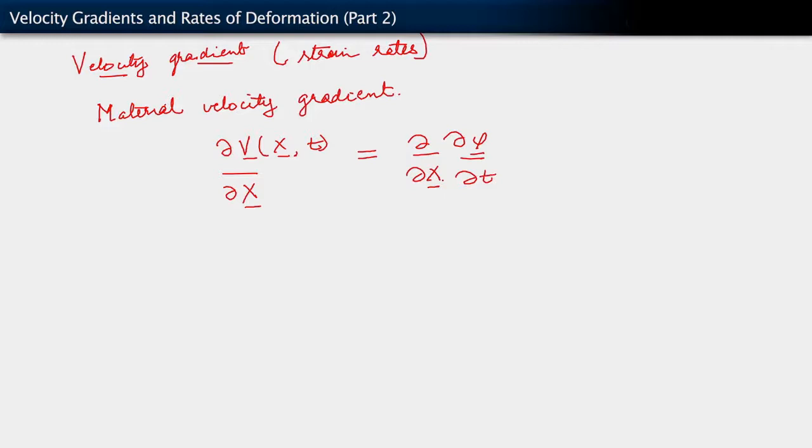Now, this we observe is simply derivative with respect to X of the derivative of φ with respect to time. Because that is what the velocity is. Now, if our motion φ is smooth enough, we know that we can interchange the order of those derivatives. And we will assume that indeed φ is smooth enough. What this lets us do is write this as the following.